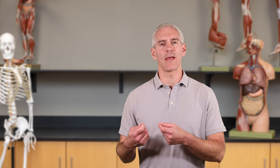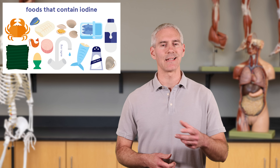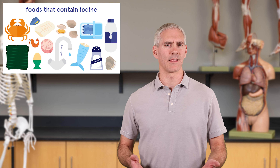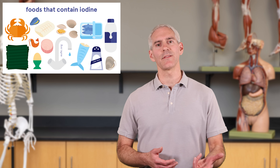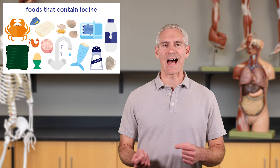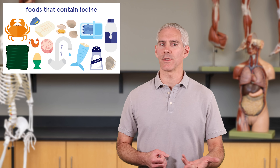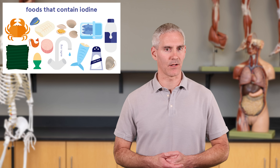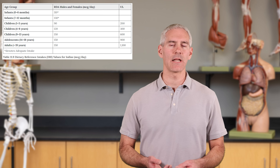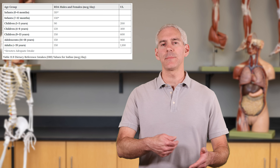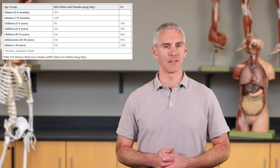Iodine sources come mostly from the sea — think fish and seaweed. But most people are still okay because a lot of the salt that is used is iodized salt, meaning iodine has been added into the salt. That's where the majority of people's iodine comes from. How much do you need? About 110 micrograms as an infant up to about 150 micrograms as an adult — not a ton, but it has to be a constant consumption of iodine.